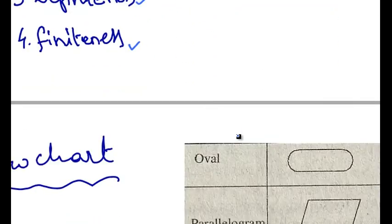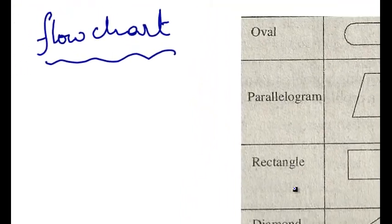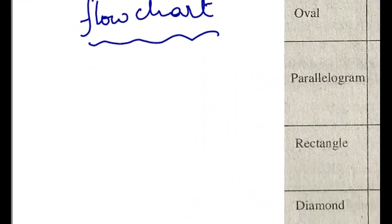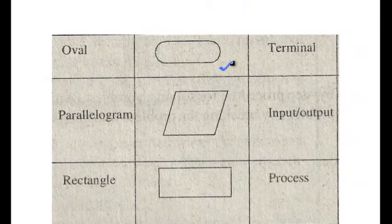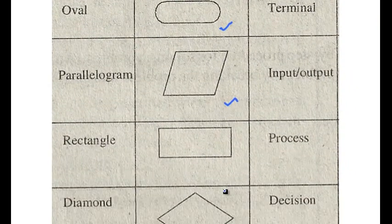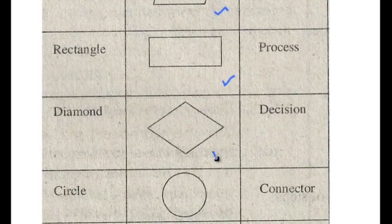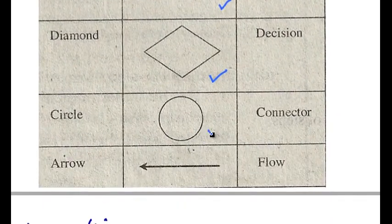The pictorial representation of the algorithm is known as a flowchart. There are several symbols or pictorial representations used to draw a flowchart. They are like oval, parallelogram, rectangle, diamond and circle and arrows.